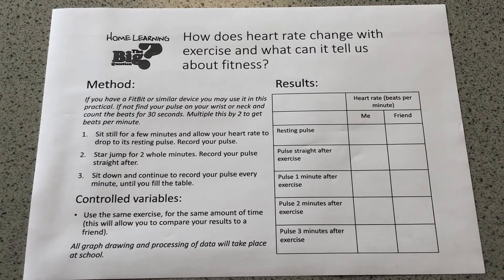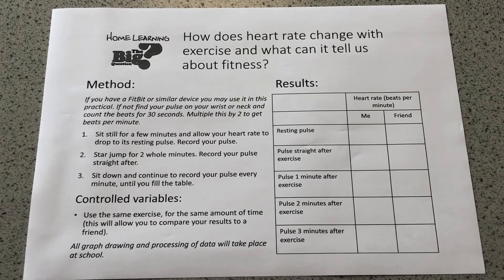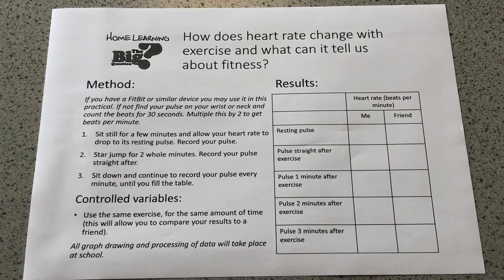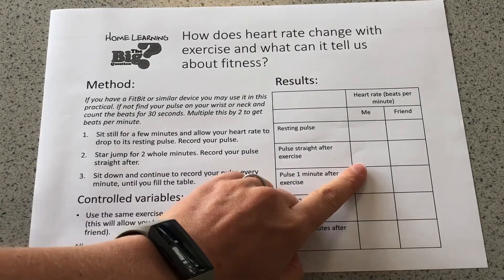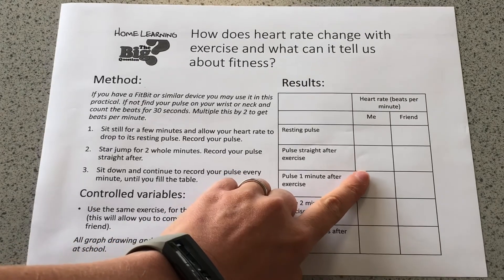Hopefully now you've got your resting pulse. We're going to do star jumps for two whole minutes. You might find this quite difficult so pace yourself, but it's important that you're doing the same activity as the person you're going to compare your heart rate to, for the same amount of time. Another way of doing this is we could run on a treadmill set at the same speed for the same amount of time to get comparable results. You'll need to measure that using a clock, stopwatch, or your phone, then put your heart rate into this box.